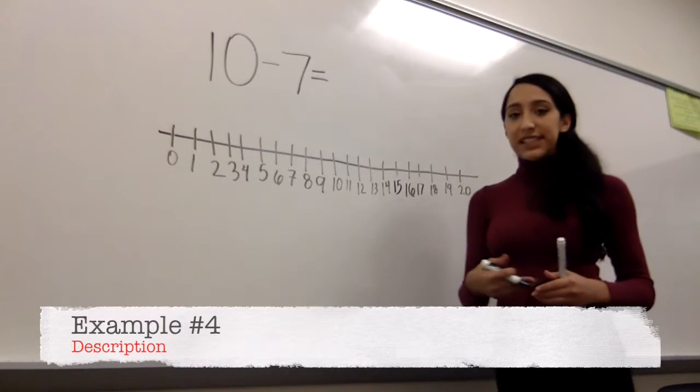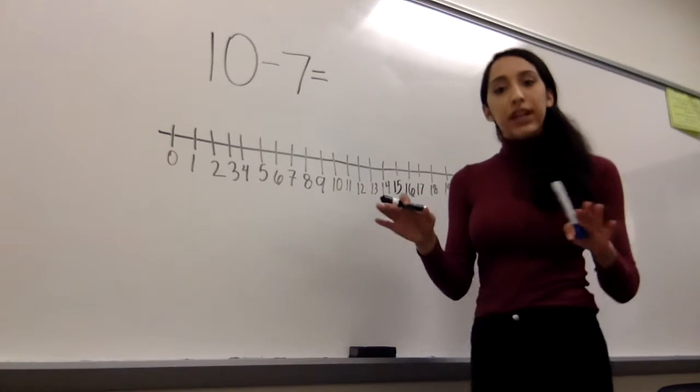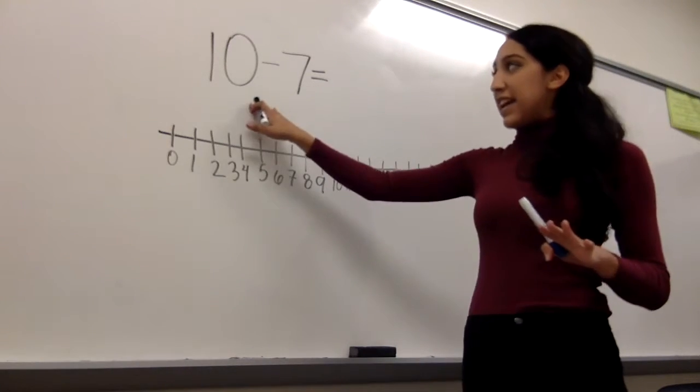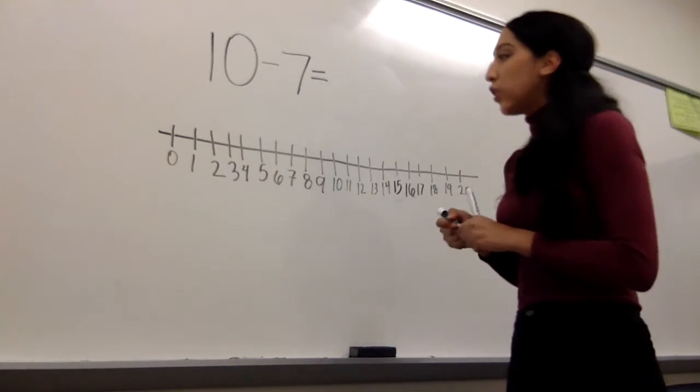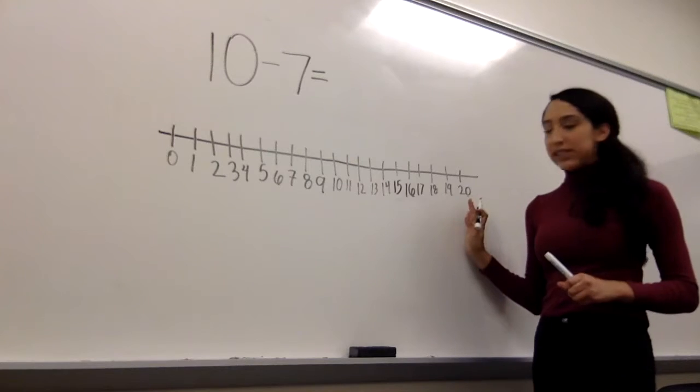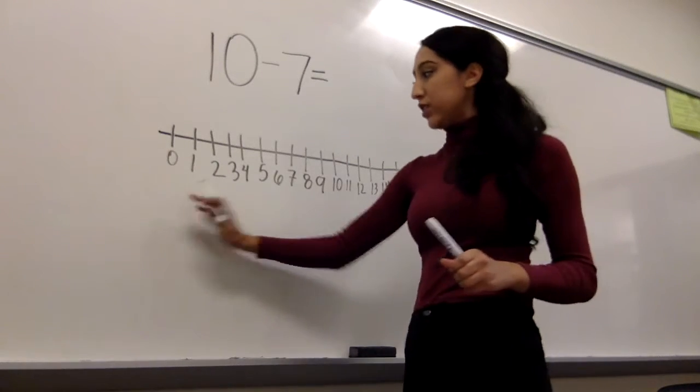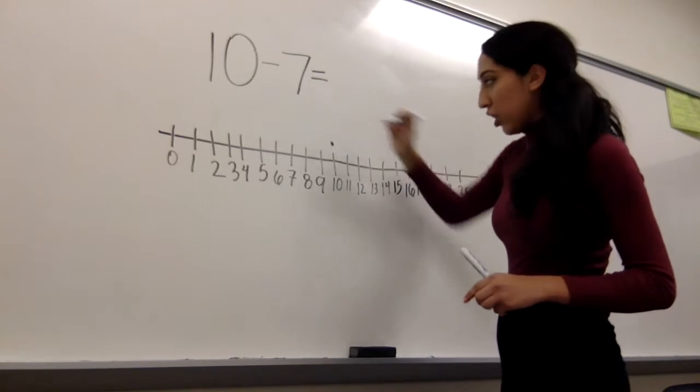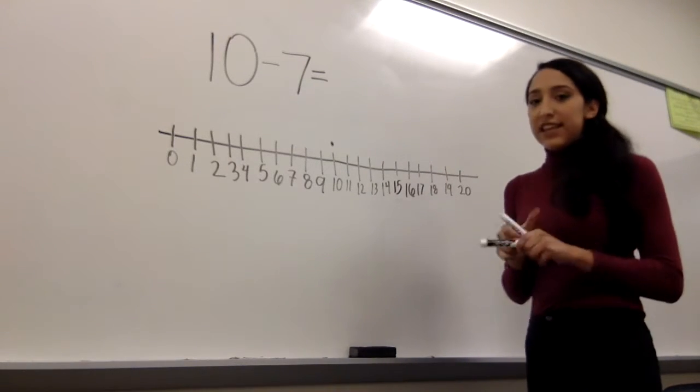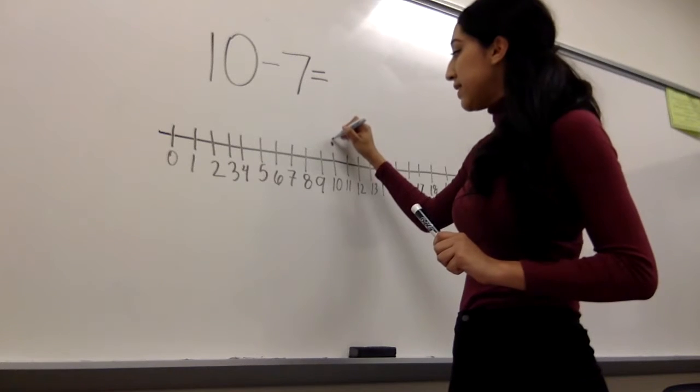Okay, so we have done the example 10 plus 7. But now we're going to do an example, 10 minus 7, which is subtraction. So for subtracting, like we said, we're going backwards. So you will start at the 10. You will draw your dot. And then you will hop back 7 spaces.